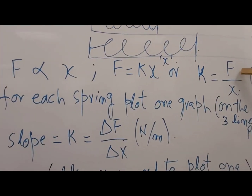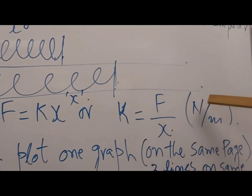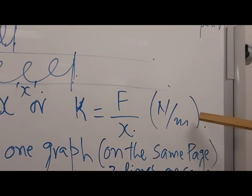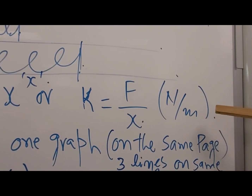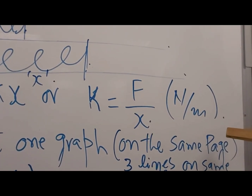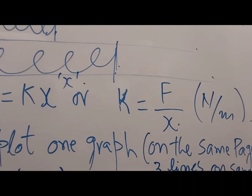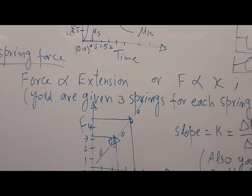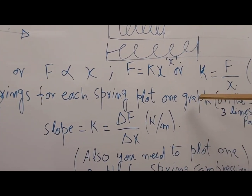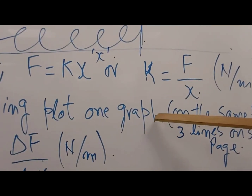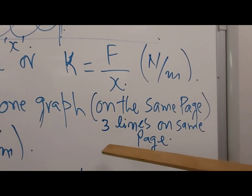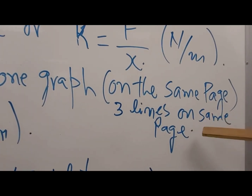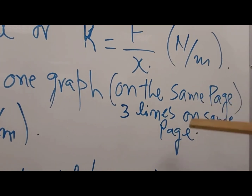The unit of force is Newtons and the unit of x is meters, so the spring constant k is in Newtons per meter — use SI units. You may record data in centimeters but convert to meters to get k in N/m. We will give you three springs; for each spring plot one graph, but you can plot all three lines on the same graph paper. You will get three lines, three slopes, and three force constants.